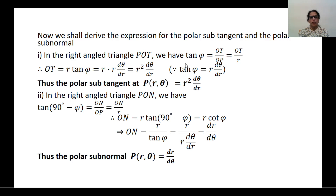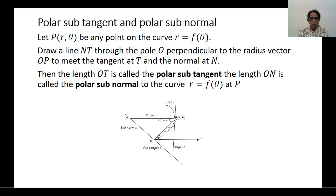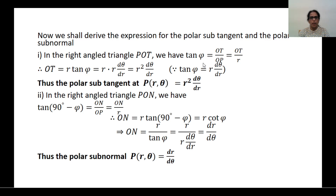We shall derive the expression to find the polar subtangent and polar subnormal. In the right-angled triangle POT, find out tan φ. It is tan φ = opposite by adjacent, that is OT divided by OP. OP is nothing but the radius vector, that is R. So it is tan φ = OT divided by R.